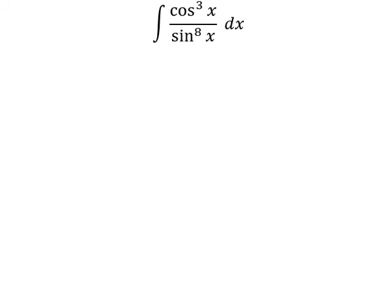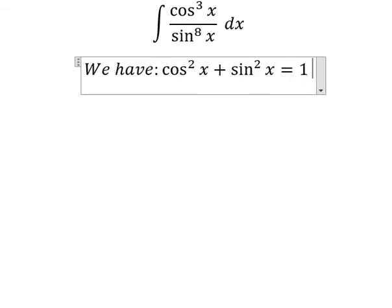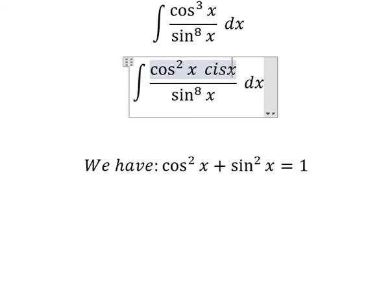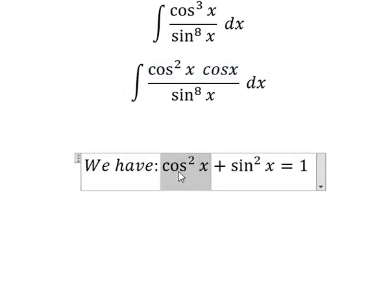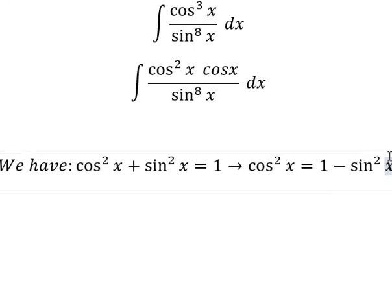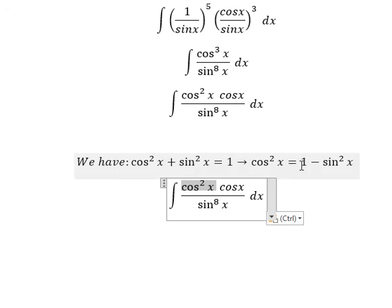Next, we have the formula: cosine x squared plus sine x squared equals 1. So for cosine x to the power of 3, we have cosine x squared times cosine x. We have cosine x squared here, so I will move sine x squared to the right. Then we need to change cosine x squared into this expression.